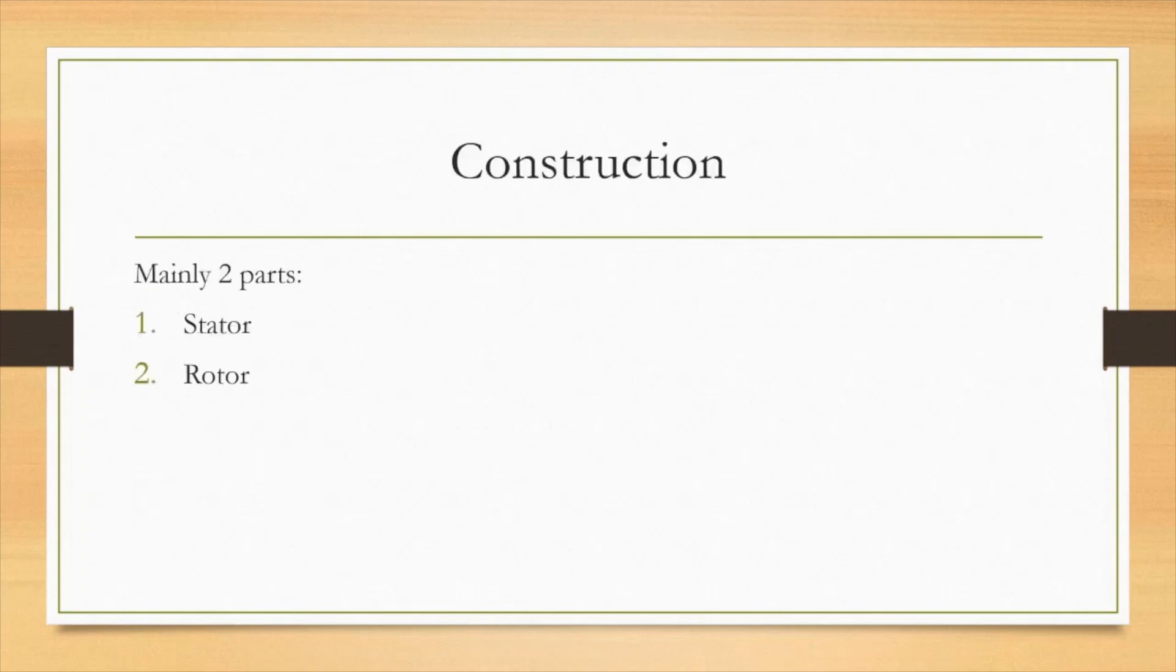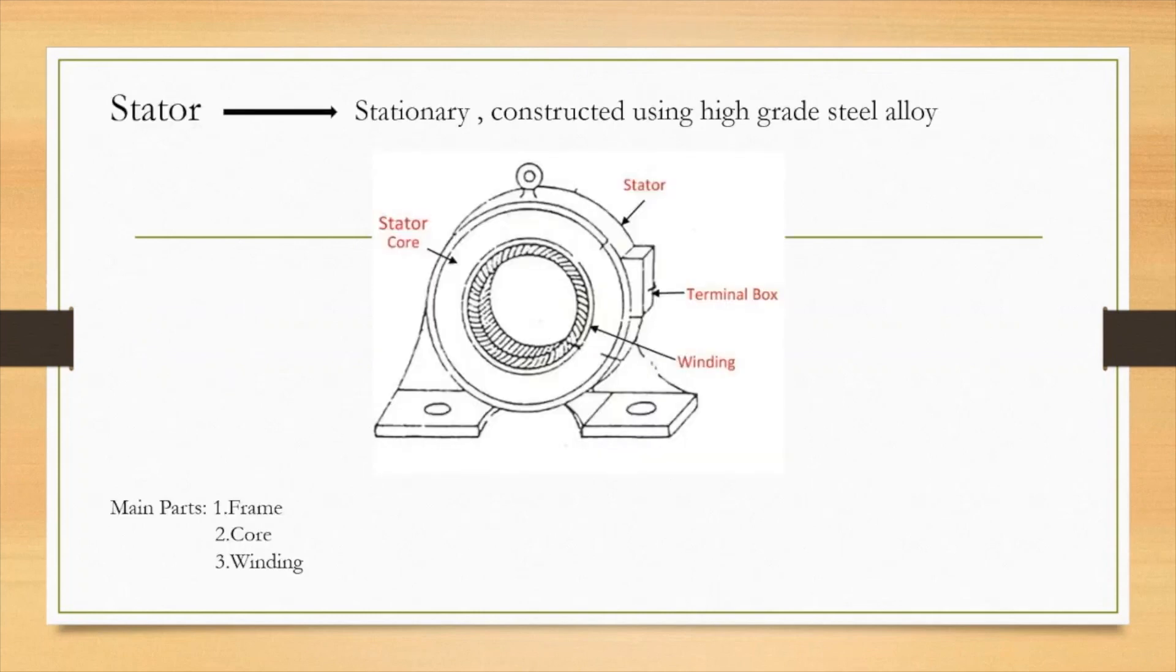Next we will see the construction of the induction motor. There are mainly two parts: first one is the stator and second one is the rotor. From the name itself, we can understand that stator is the stationary part. It is constructed using high-grade steel alloy. There are three main parts: frame, core, and winding. We will see what is a frame.